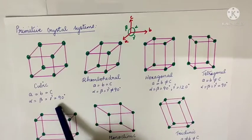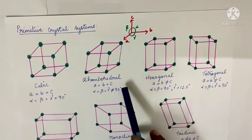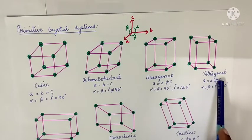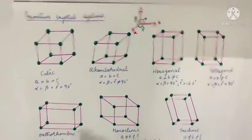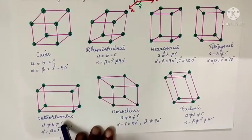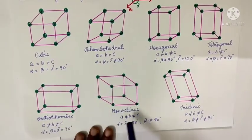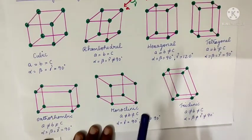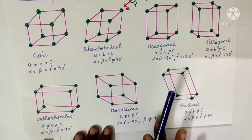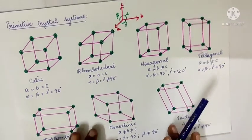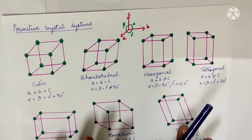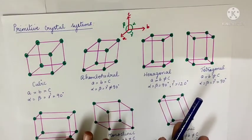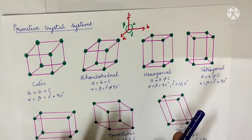The seven types are: cubic, rhombohedral, hexagonal, tetragonal, orthorhombic, monoclinic, and triclinic.